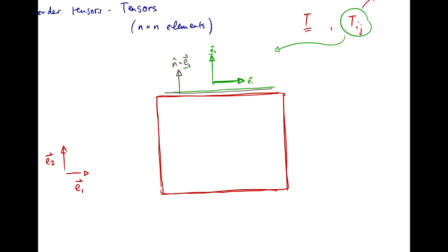So, in this case, the element that describes this vector here is T21 because the first index, the first free index I, denotes the direction of the normal to the surface on which the force is acting. So, that is direction 2.